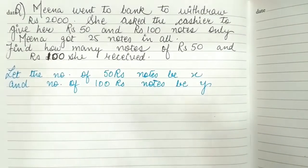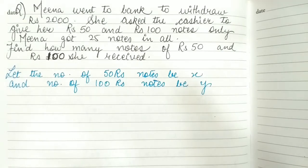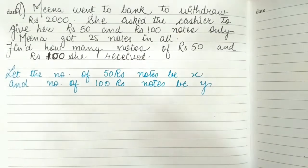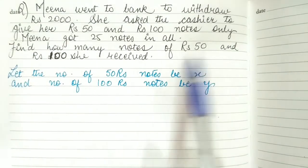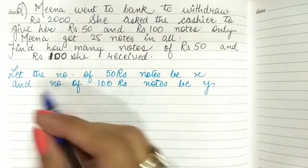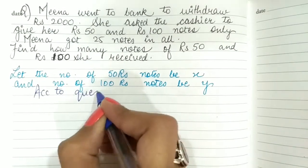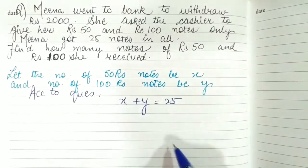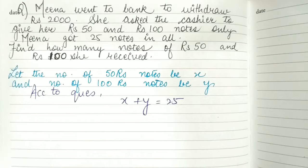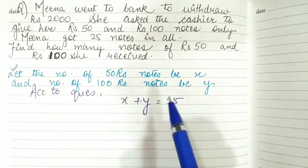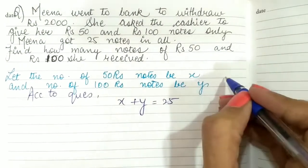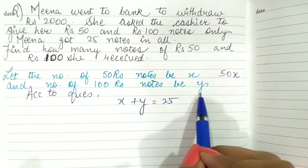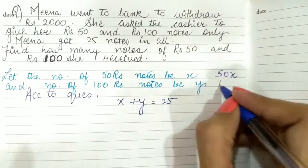Second problem: Meena went to a bank to withdraw 2000 rupees. She asked the cashier to give her 50 rupee and 100 rupee notes only. Meena got 25 notes in all. Let x be the number of 50 rupee notes and y be the number of 100 rupee notes. Total amount: 50x plus 100y equals 2000.